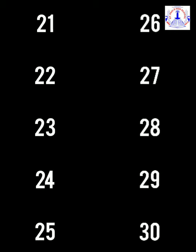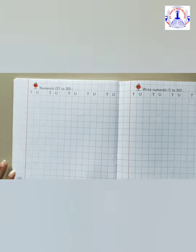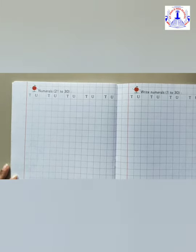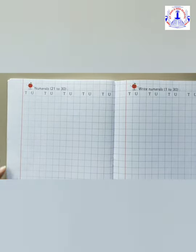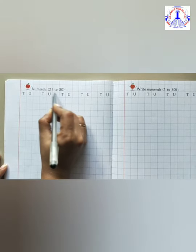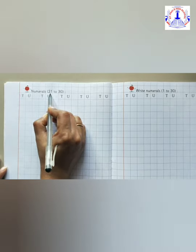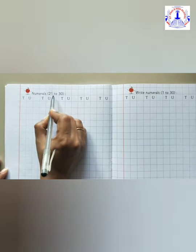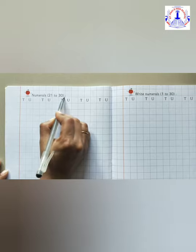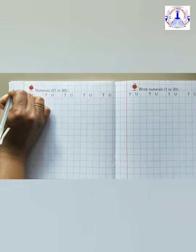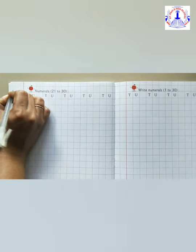Now let's start with the writing part. Okay children, now come to page number 48 of your workbook. Here the topic name is already given: we are going to write number 21 to number 30. So children, write here today's date.